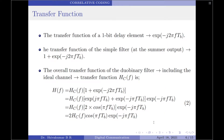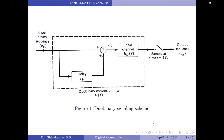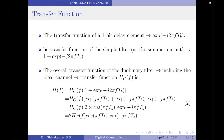Let us now move on to the mathematical aspect. We start by finding the transfer function of the duobinary filter. The block shown in dashed lines is the duobinary conversion filter — it is the simple filter and the ideal channel cascaded together. The duobinary conversion filter has a transfer function H(f).